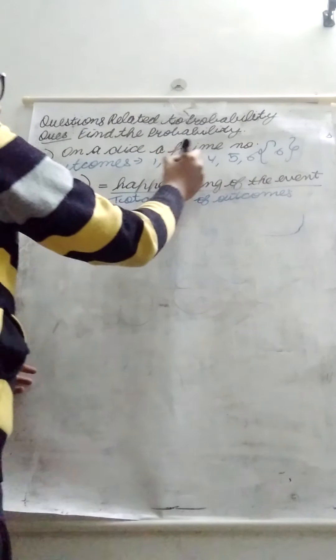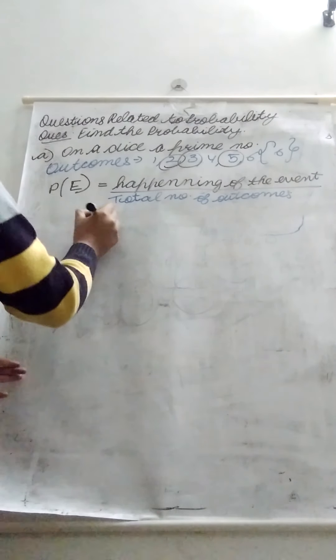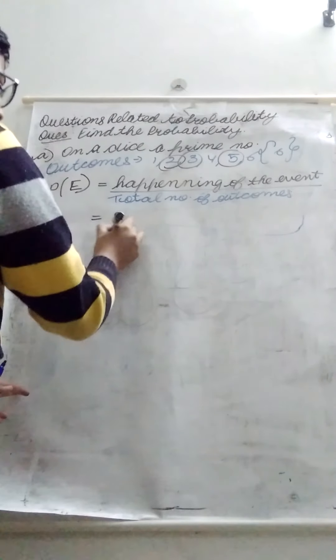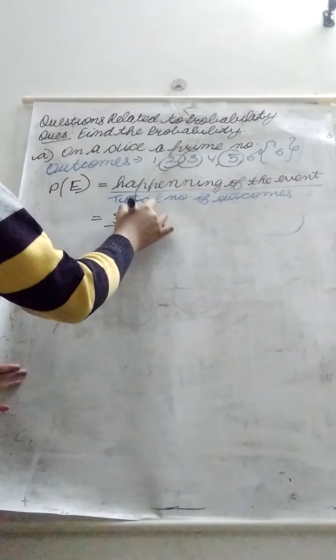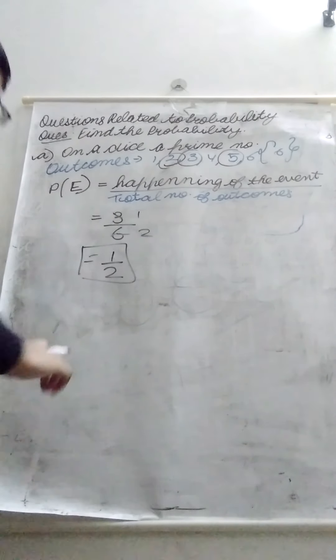Three. Total number of outcome is six. This is our answer. Then we will simplify. One upon two is our final answer.